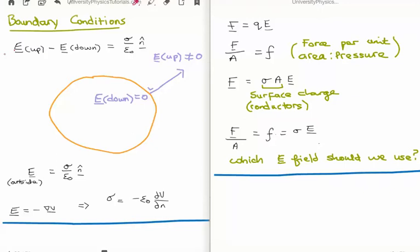We know that the electric field inside of a conductor is zero, but the electric field outside of a conductor is non-zero, and it is perpendicular to the conductor at its surface. So if this circular blob is our conductor, the electric field on the inside or downside is zero, but the above or upside of our electric field is non-zero. This means that the electric field outside is equal to sigma over epsilon zero n hat.